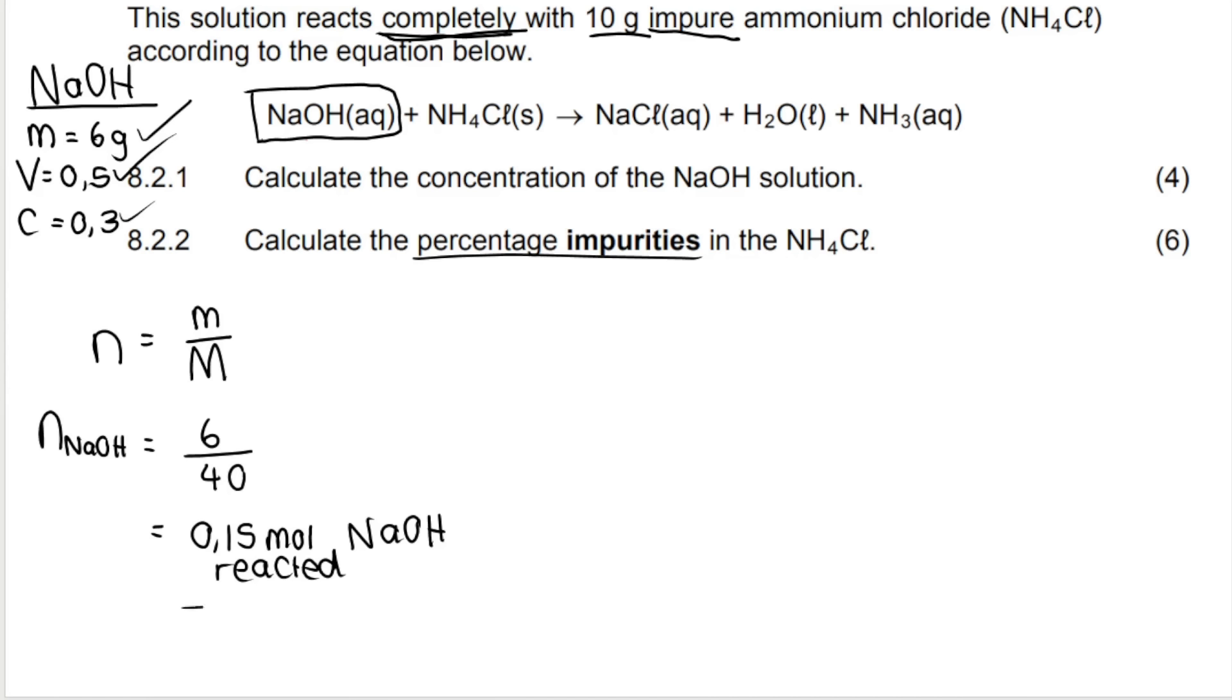And it says we're reacting it completely, which means all of this is going to get used up. Then what we're going to do is, and this is how stoichiometry works, if you know the amount of NaOH that reacted, you can use a mole ratio to find the moles of the other reactant, ammonium chloride, that reacted. So the mole ratio is a one to one ratio. We get that from our balanced chemical equation. So what that means is I know that if I react 0.15 moles of NaOH, I will also react 0.15 moles of NH4Cl. And again, what the stoichiometry tells me, what the calculations tell me is always going to be pure. So I know the pure moles of NH4Cl.